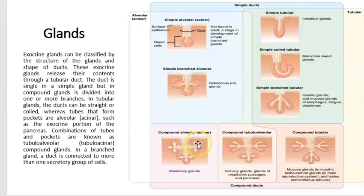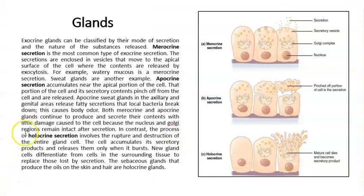If the acinus is like a balloon, it's alveolar. If it has multiple branches, it's compound. Another way you can classify the glands is by the way they secrete — the way they release the contents. For that, you have merocrine glands, apocrine glands, and holocrine glands.